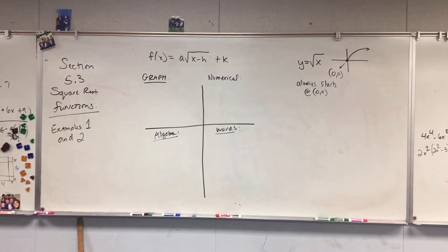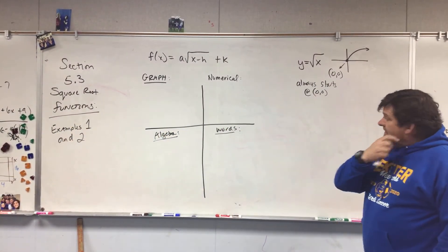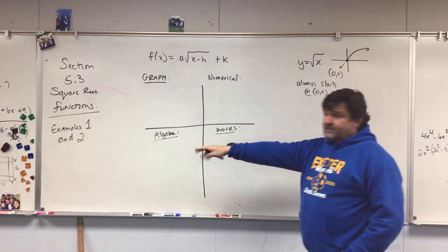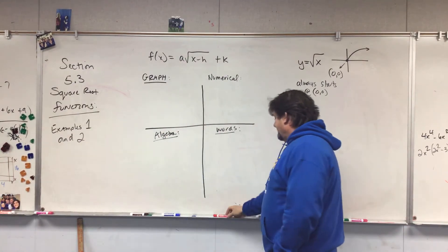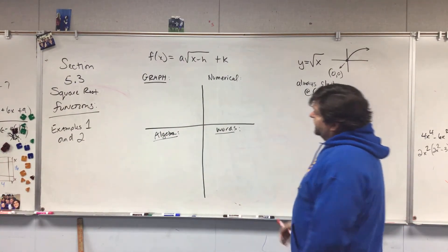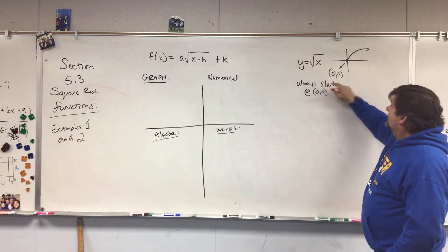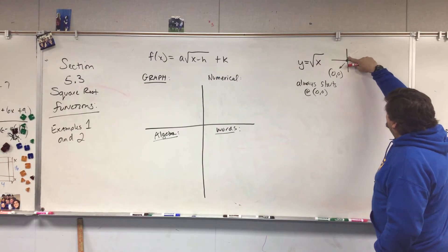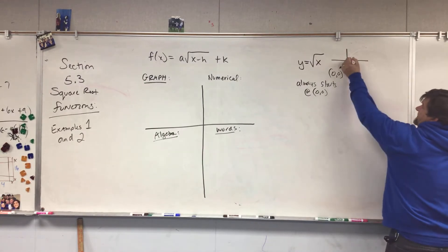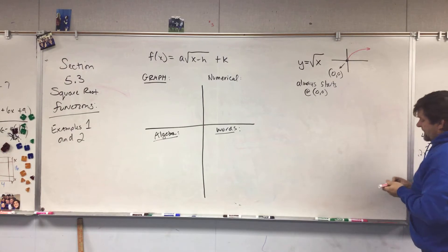All right guys, here we go — we're in section 5.3, square root functions. You can look at examples 1 and 2, but if you look up square root functions on the internet you'll find a lot of information. Square functions are y equals x squared and they look like this — let me do that in a different color. They always start at zero and zero and look something like that.